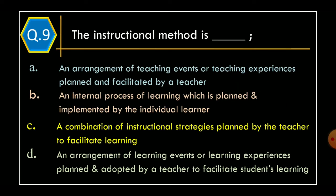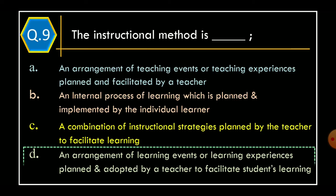Question 9. The instructional method is: Option A – An arrangement of teaching events or teaching experiences planned and facilitated by a teacher. Option B – An internal process of learning which is planned and implemented by the individual learner. Option C – A combination of instructional strategies planned by the teacher to facilitate learning. Option D – An arrangement of learning events or learning experiences planned and adapted by a teacher to facilitate students learning. The correct option is Option D: An arrangement of learning events or learning experiences planned and adapted by a teacher to facilitate students learning.